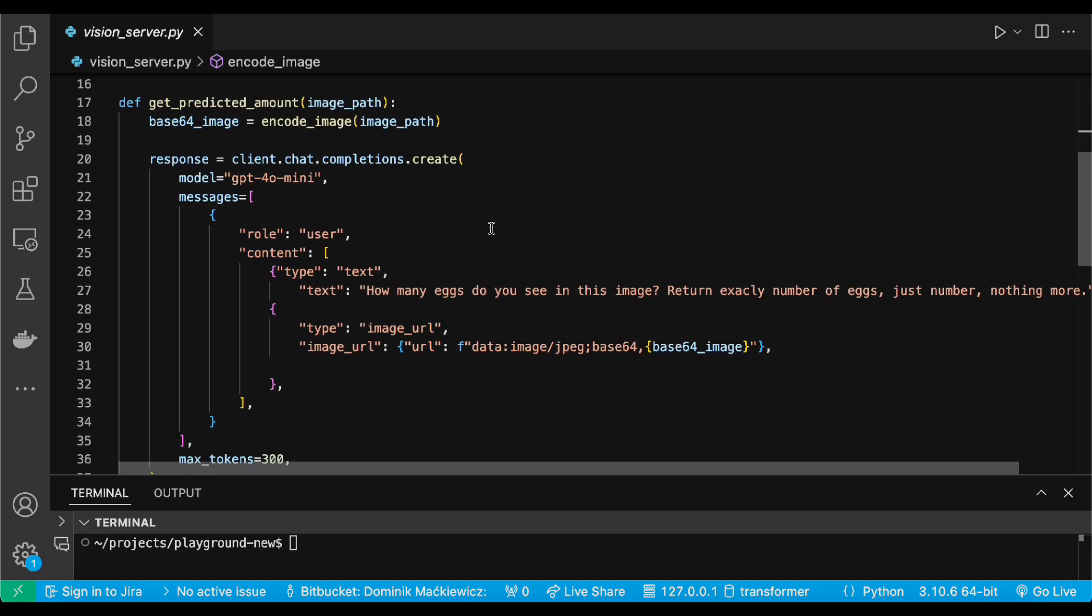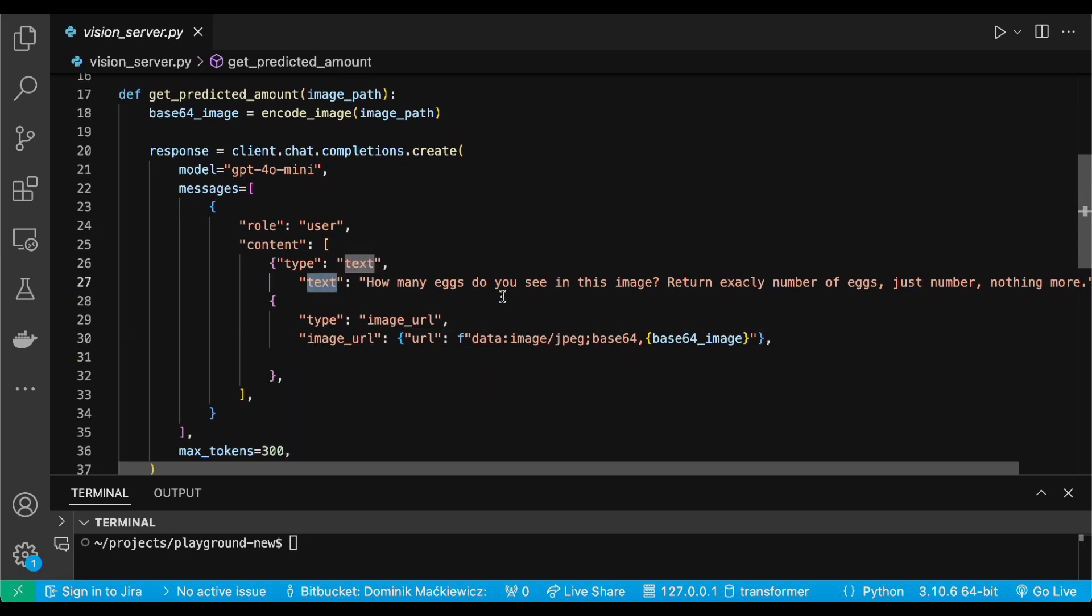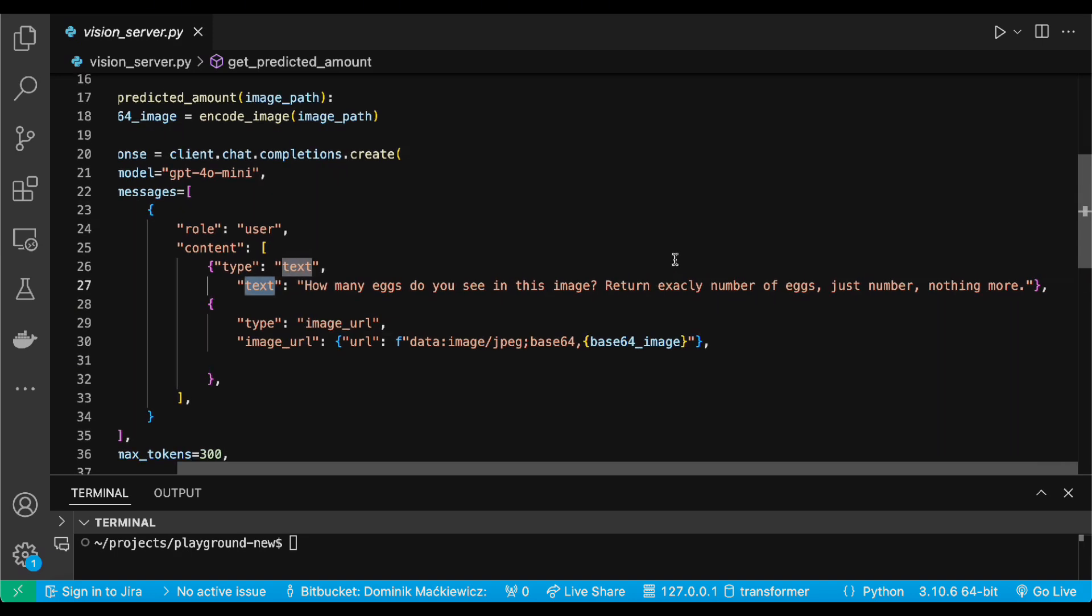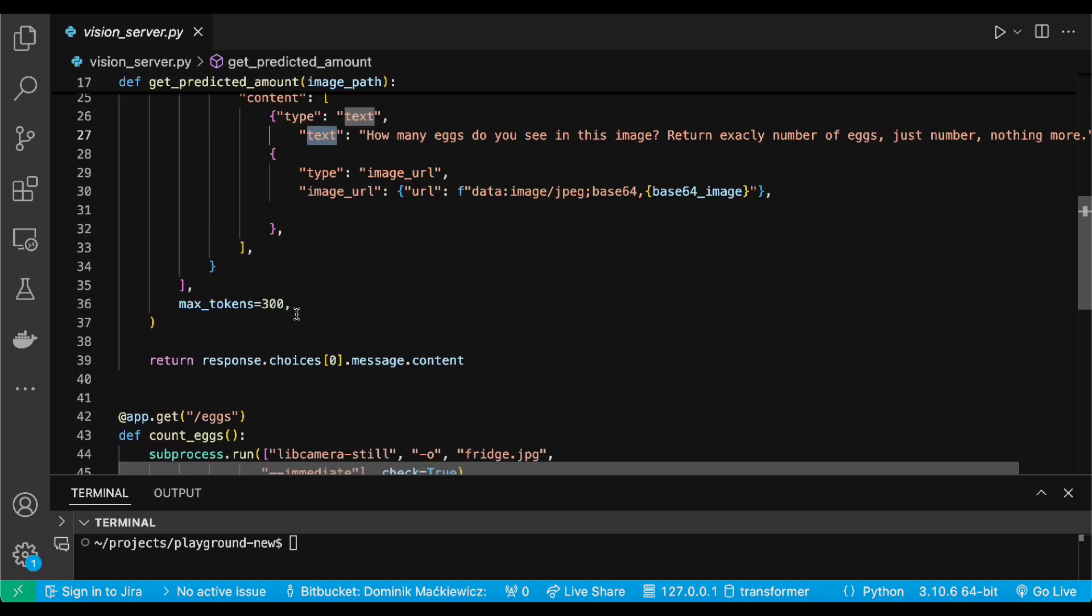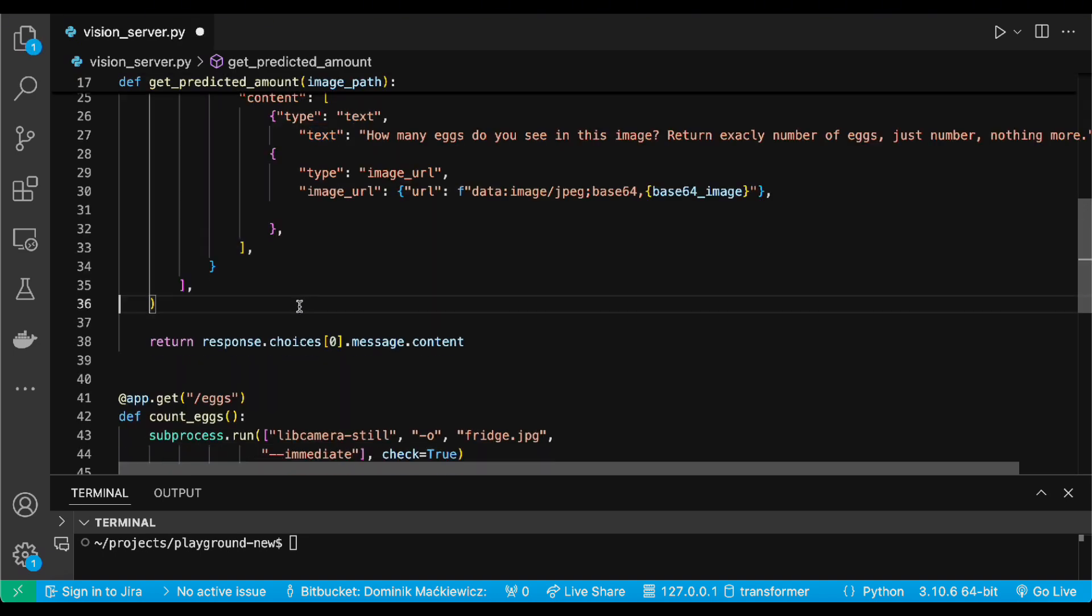Next, I have API request, which consists of image and description. How many eggs do you see in this image return exactly? Number of eggs, just number, nothing more. Max tokens. Actually, it's not necessary. I can remove that.